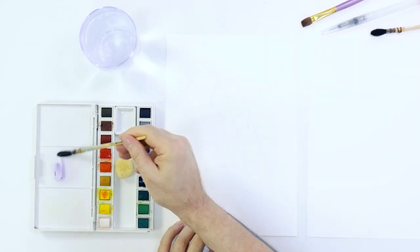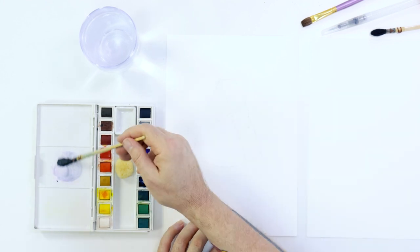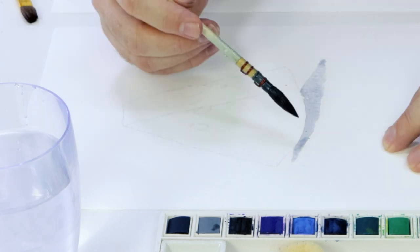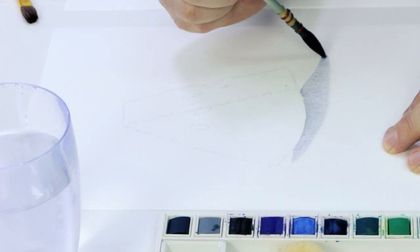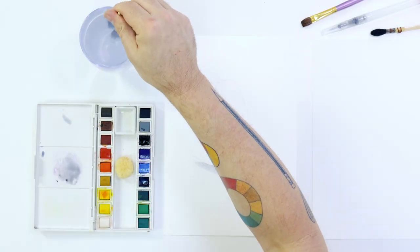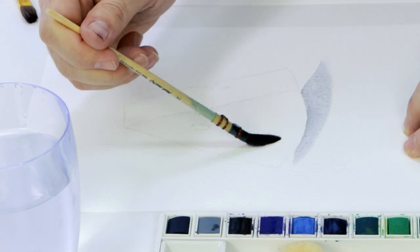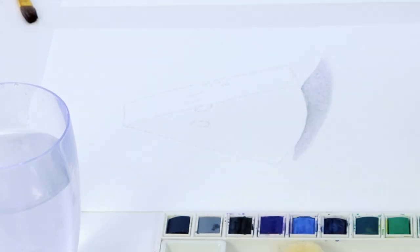The first step is to lay in the shadow. Dampen the shadow area with clean water, then create a mix in the palette from black and some dark blue and lay this in with the mop brush. Allow this to dry, then lay clean water into the front triangle of the watermelon. Lay the water almost to the bottom.